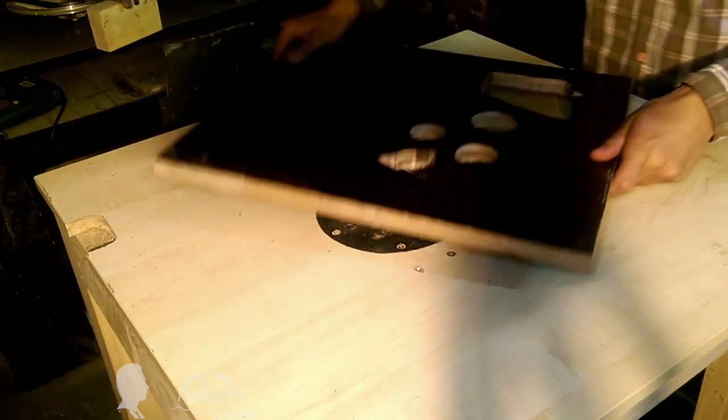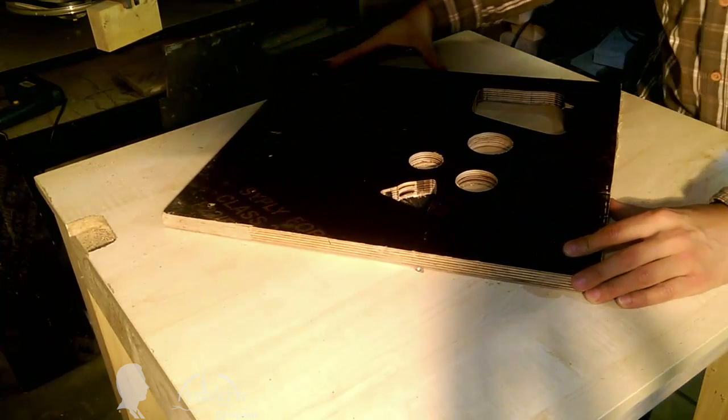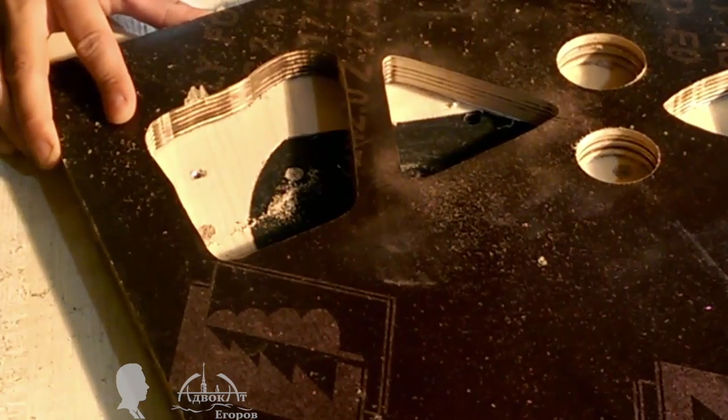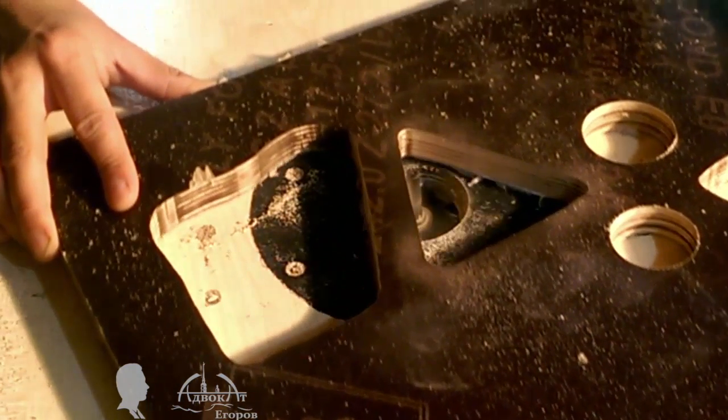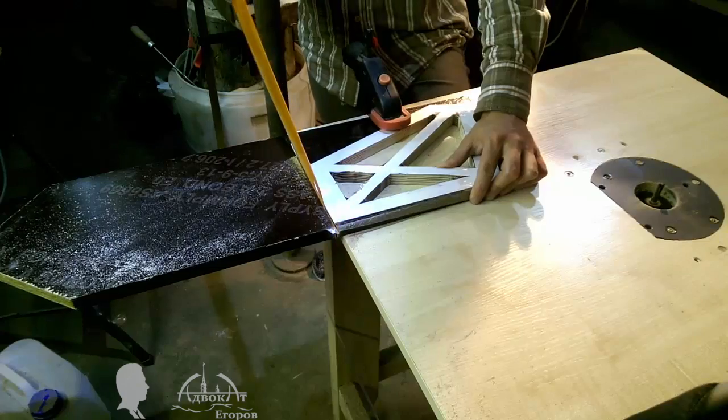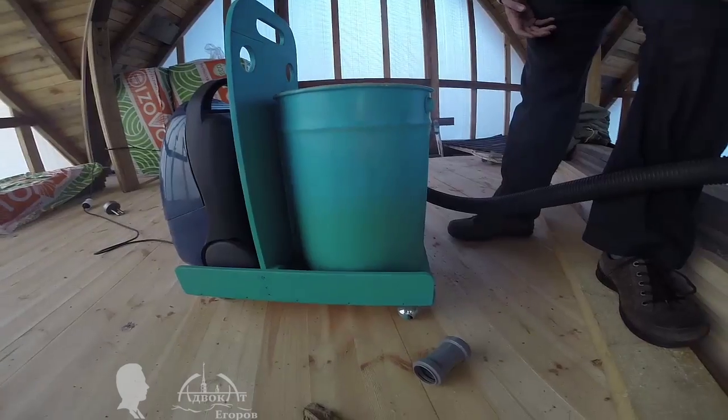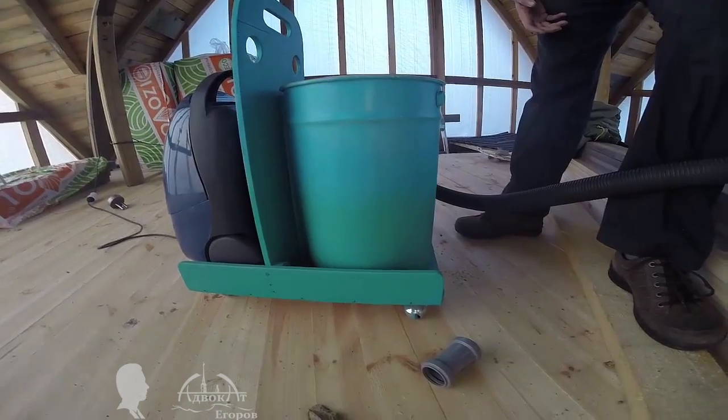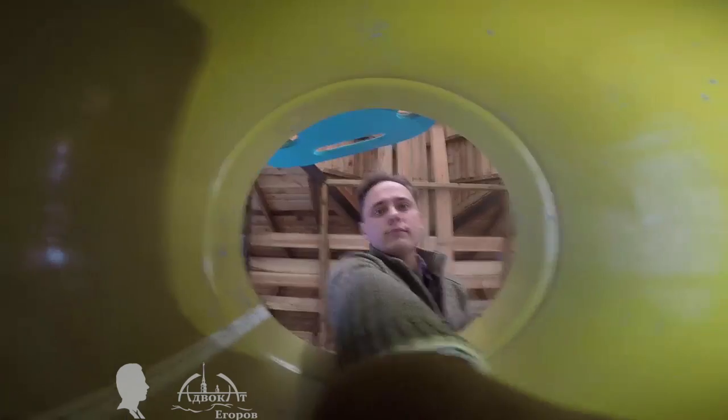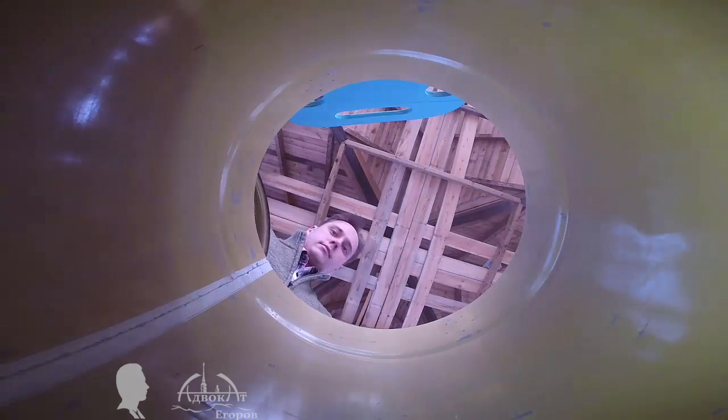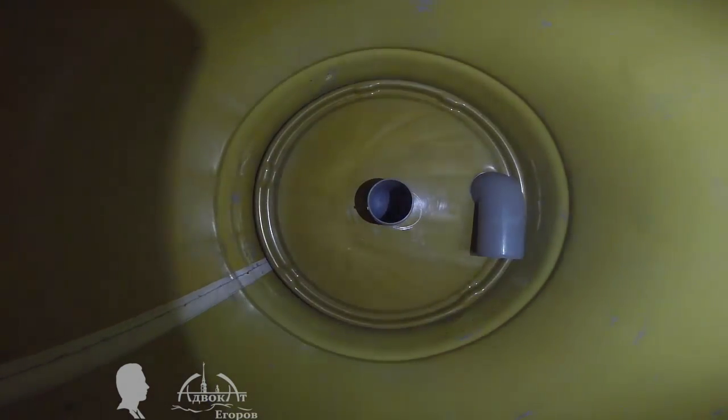I used to hesitate on using my router table given the amount of dust it produced. Since installing the cyclone setup on it, the amount of dust has been minimal and now I use it a lot more. In this footage, you can see how the wooden chips get sucked into the bucket and can't escape it. Only a small amount of fine dust manages to make it to the vacuum's filter.